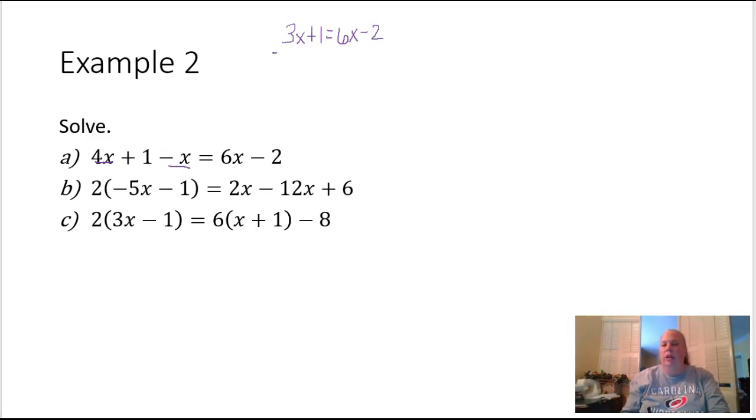Let's get all our x's on one side so we can subtract the 3x over here. This is going to give me 1 equals 3x minus 2. If I add the 2 over here we have 3 equals 3x, and then dividing by 3 tells me that this equation has a unique solution and that unique solution is that x is equal to 1.